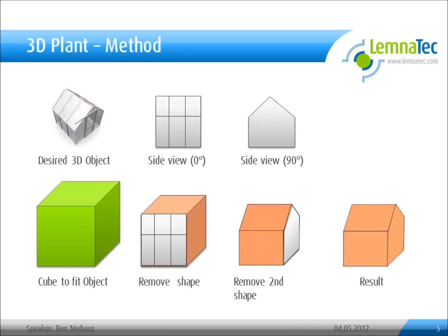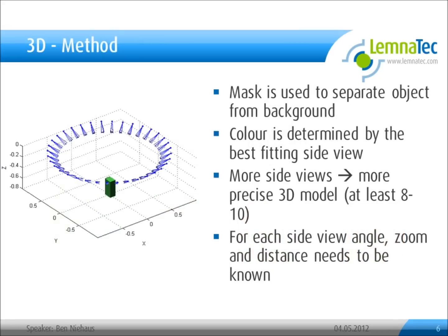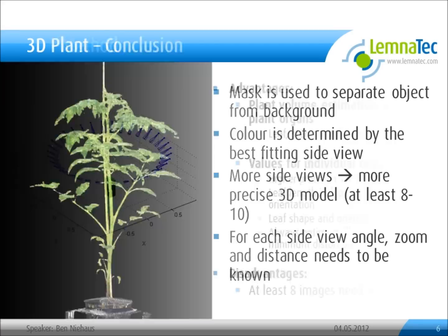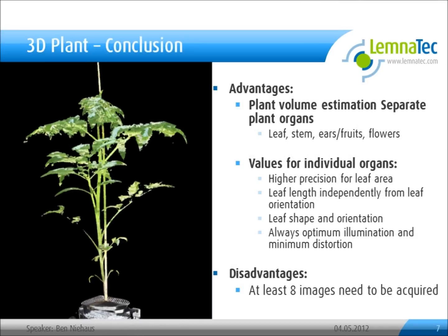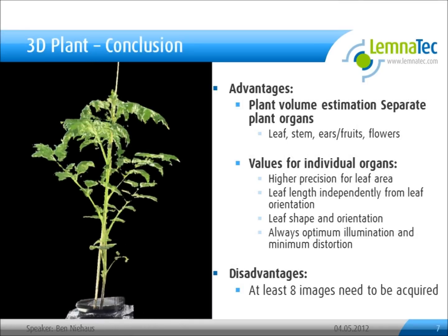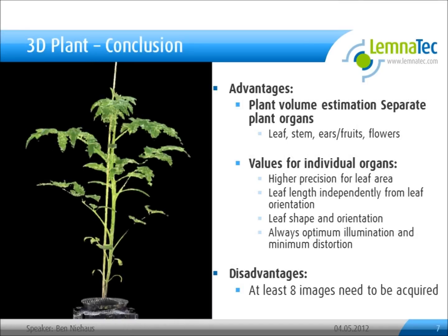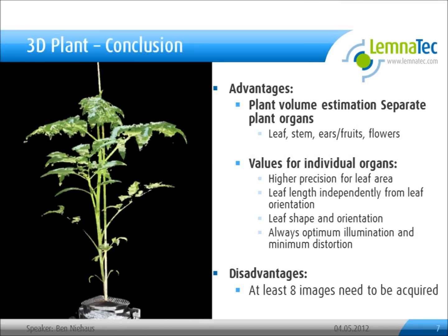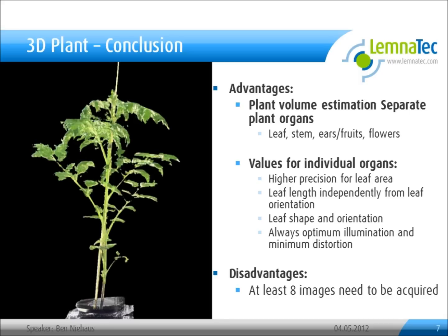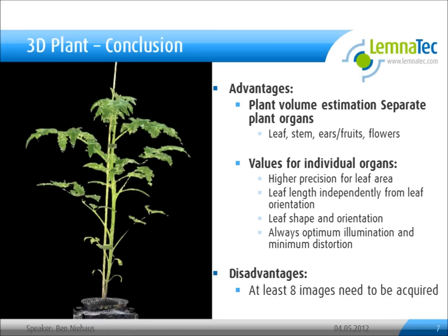To create such a 3D model, we need information about the lens, the distance between the object and the camera, as well as the angle of the object inside each view. It turns out that we need at least 8 to 10 images to create a decent 3D model, depending on the complexity of your image.